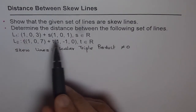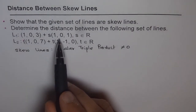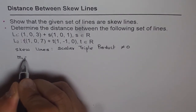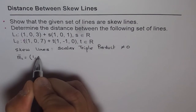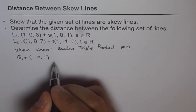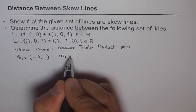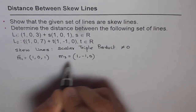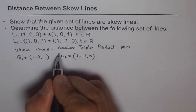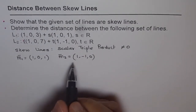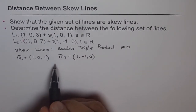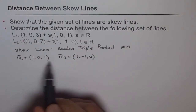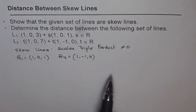Looking at these two lines, we have two direction numbers given. Let me write M1 as the first direction number, which is (1, 0, 1). And then we have M2, which equals (1, −1, 0). These are the two direction numbers. Now if we take their cross product, we get something which is perpendicular to both of them.